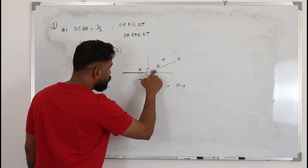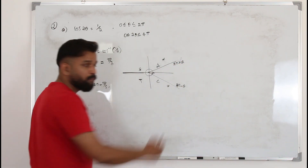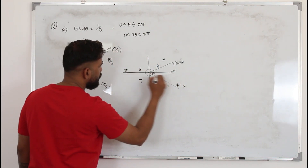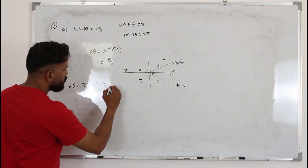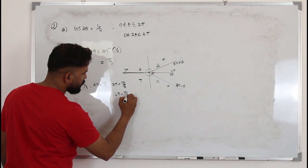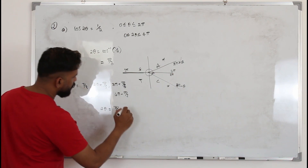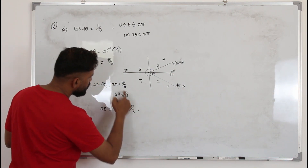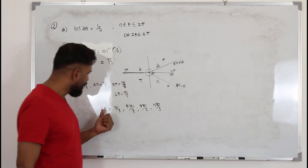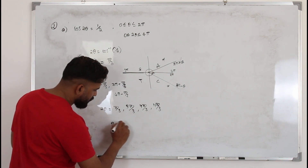Our limit is 0 to 4π, so we also need solutions from 2π to 4π. Going around a second time, the solutions become 2π + θ and 4π - θ. So we now have four values: 2θ = π/3, 5π/3, 7π/3, and 11π/3. But we need θ, so divide everything by 2 to get θ = π/6.